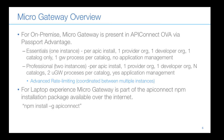If you're deploying a Micro Gateway, it's present in the API Connect OVA, and also present in the NPM API Connect download. The Essentials license means one instance per API Connect install — one provider organization, one developer organization, one catalog, and one gateway process per catalog, without application management on top. Professional allows two instances — essentially two Micro Gateway processes per catalog — with some advanced rate limiting that coordinates between the two instances.